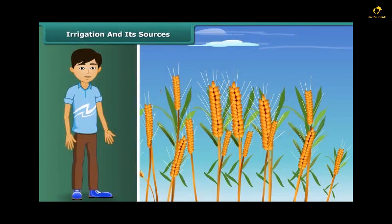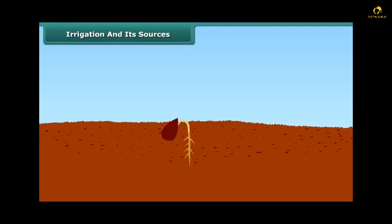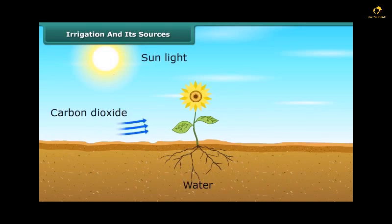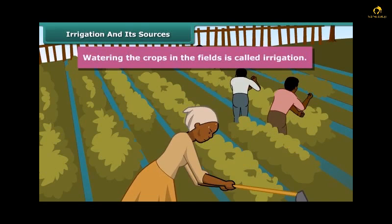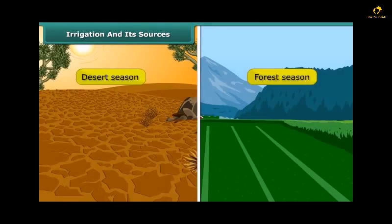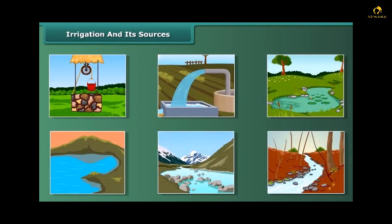Water is very essential for crop production. Germination of seeds cannot take place under dry conditions. Water is absorbed by plant roots, and along with it, minerals and fertilizers are also absorbed. Watering the crops in the fields is called irrigation. The time and frequency of irrigation varies from soil to soil, crop to crop, and season to season. Sources of irrigation include wells, tube wells, ponds, lakes, rivers, dams, and canals.